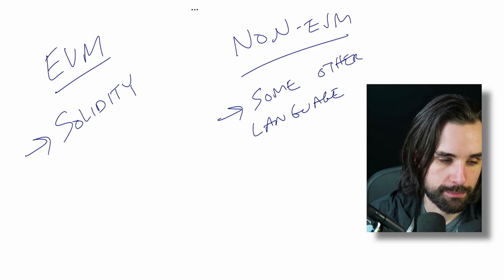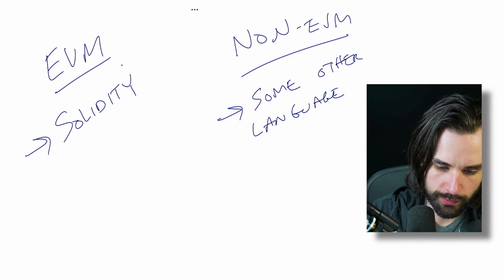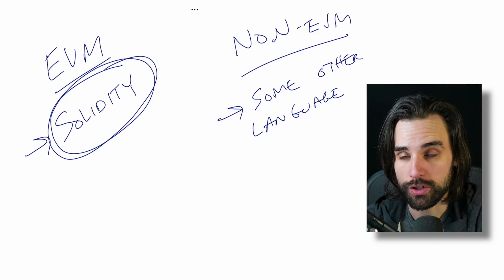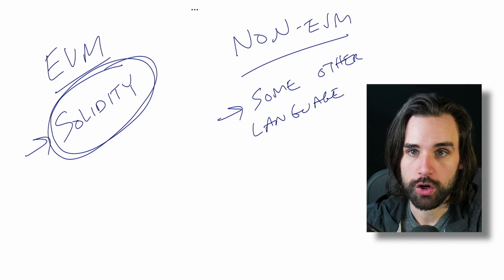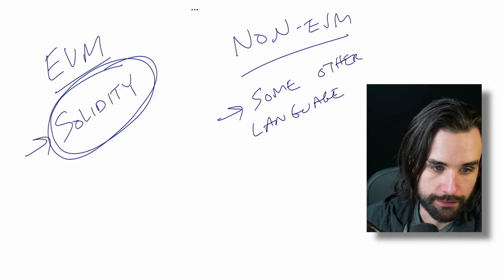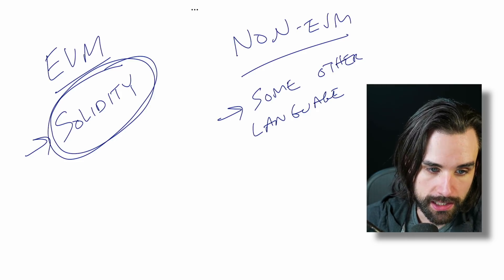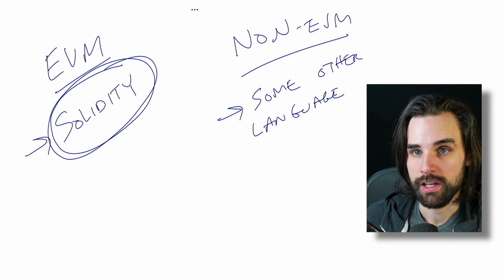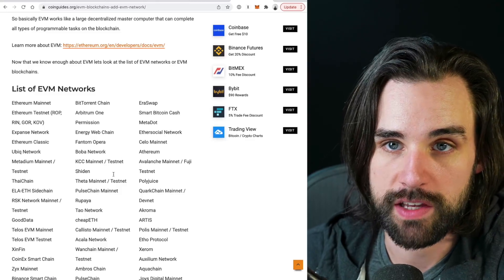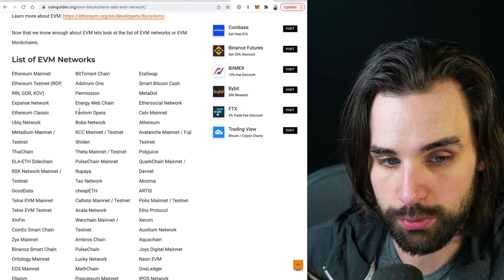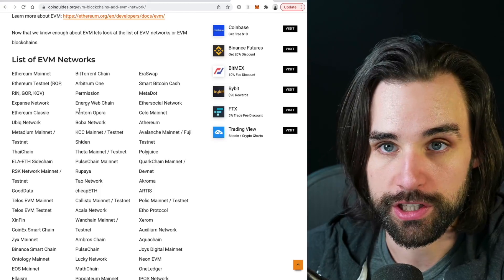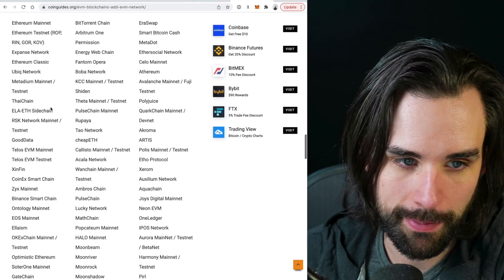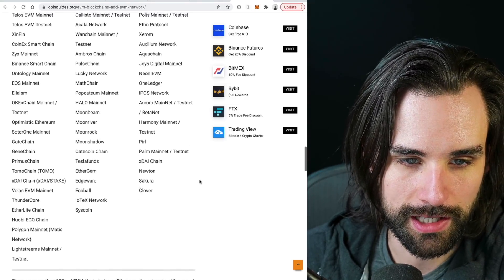This is what we call EVM compatible. If you can write programs for Ethereum — the most popular ecosystem — you can make your programs work in their ecosystem too, typically with minimal code changes if any. So if you're writing for Ethereum, you need to understand the Solidity programming language for writing smart contracts. You can then apply that to lots of other EVM compatible chains like Phantom, Avalanche, and Polygon. There's an absolutely massive list of EVM compatible chains — if you learn Solidity, you get all of these for free.